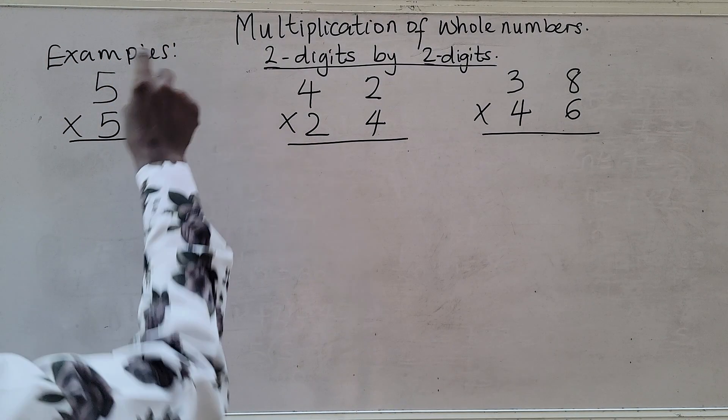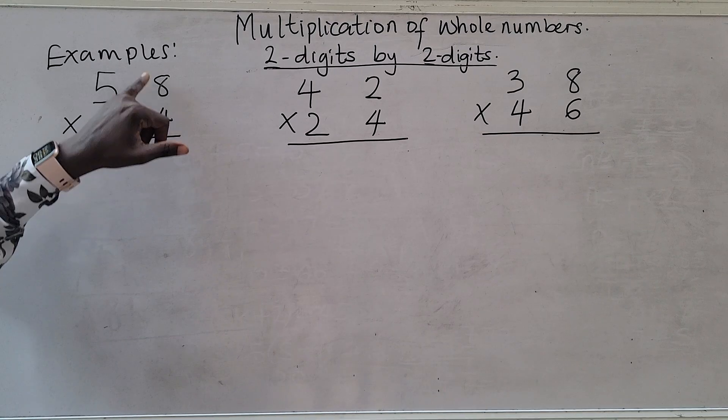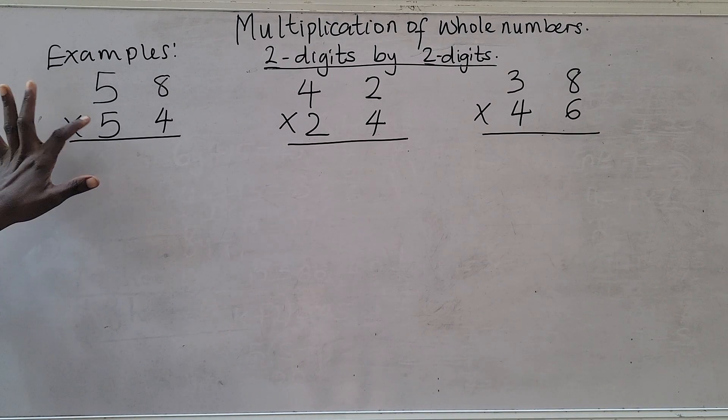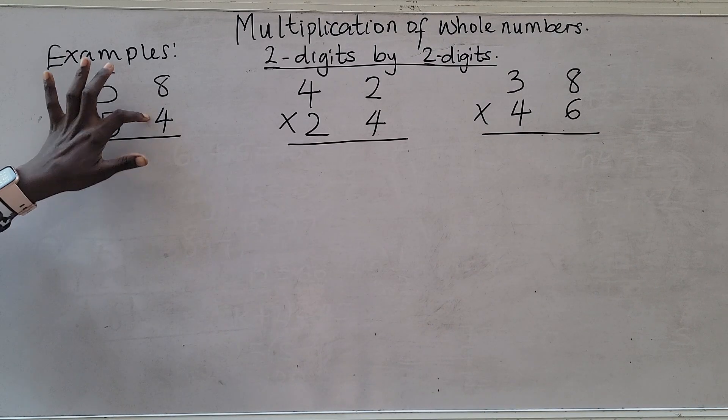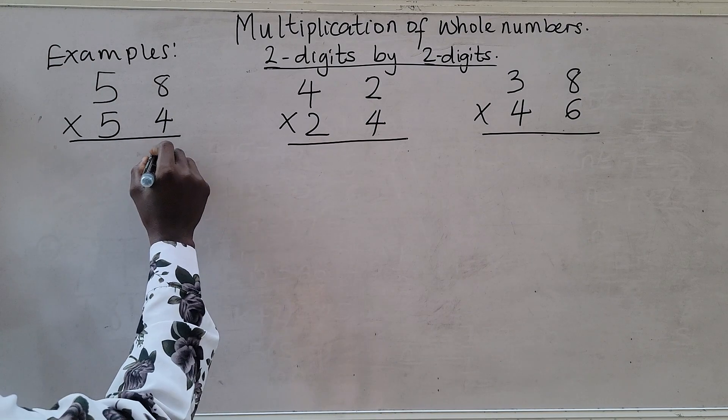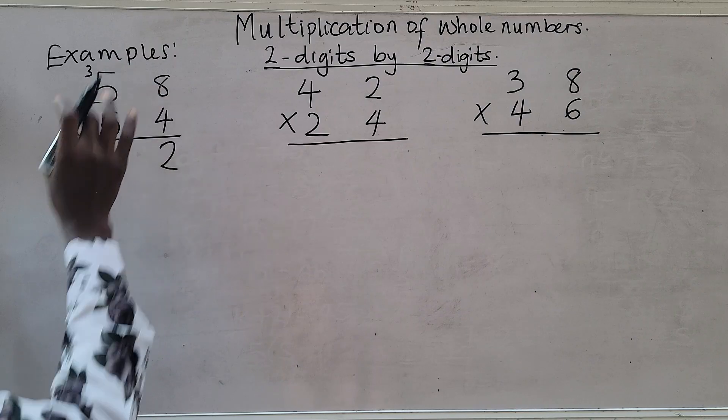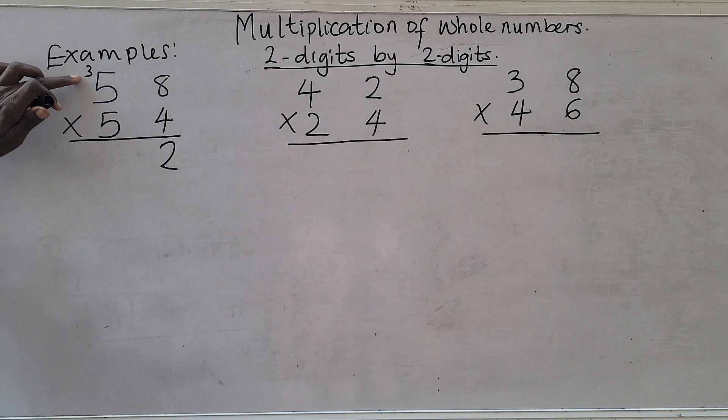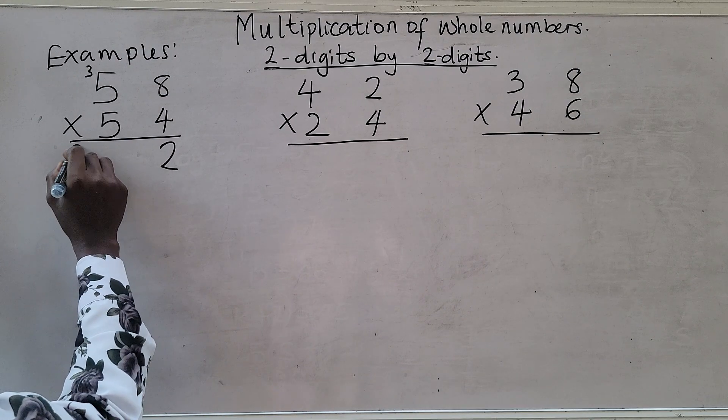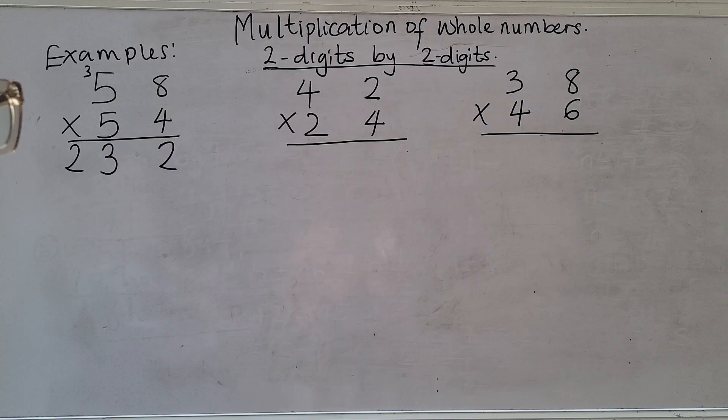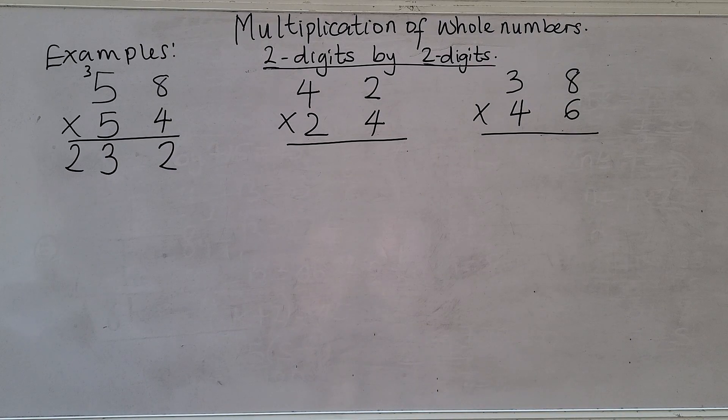Four times eight. You are going to use the first number to multiply first before going to the second number. Four times eight is 32, we are left with three. Four times five is 20 plus three, that is 23.